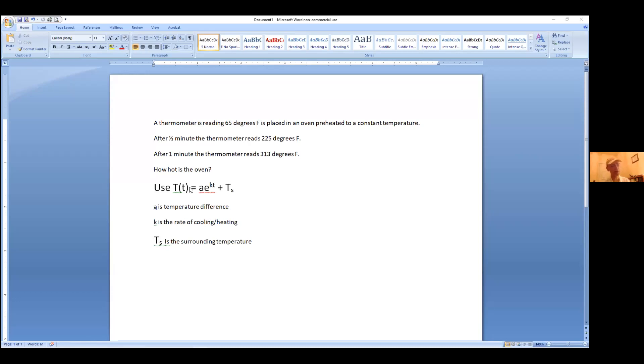And the student emailing me is asking me to use this formula since this is what's been shown in the textbook. And so we know that A is the temperature difference between the object and temperature of the surrounding. K is the rate of cooling or heating in this case. And T sub s is the surrounding temperature. In this case, the temperature of the oven because we are placing the thermometer into the oven.